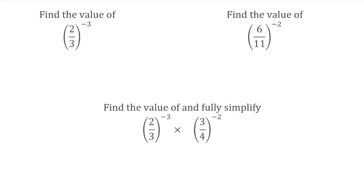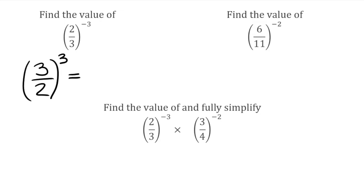For this first question, we've got 2 thirds to the power of negative 3. When we see a negative power with a fraction, we flip it upside down. So this is the same as 3 over 2 all to the positive power of 3 — we're going to cube it. Cubing top and bottom: 3 cubed is 27, and 2 cubed is 8. So our final answer is 27 over 8.